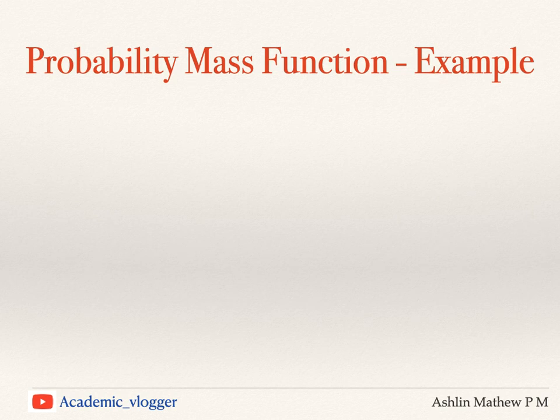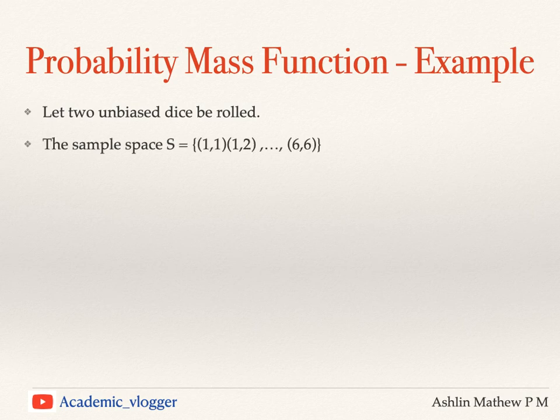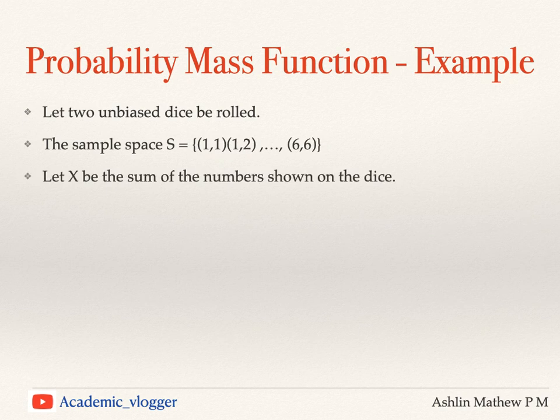Now we shall move on to an example for this probability mass function, for which we are considering two unbiased dice. So we roll two unbiased dice. Since they are unbiased, the possible values on both dice could be (1,1), (1,2), (1,3), etc. The sample space will run from (1,1), where both dice show 1, up to (6,6), where both dice show 6. We define this random variable X to be the sum of the numbers shown on the dice.